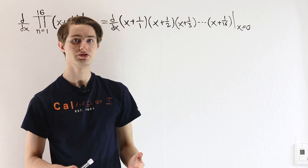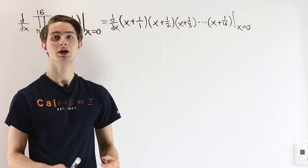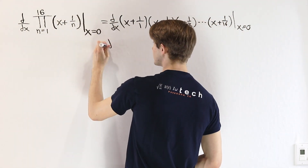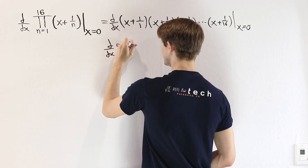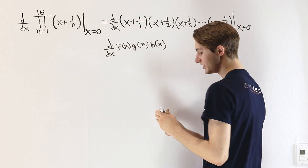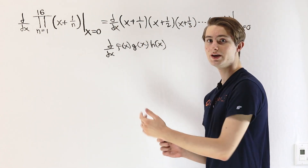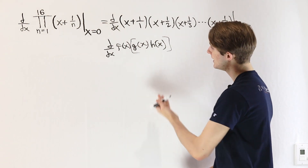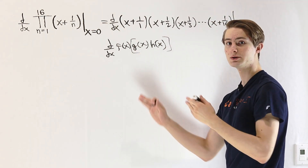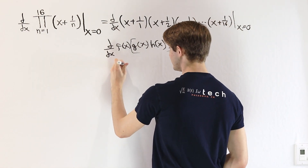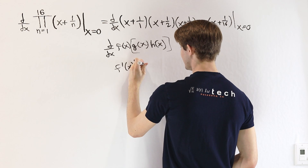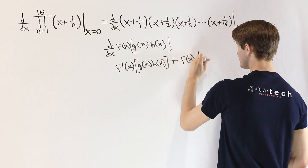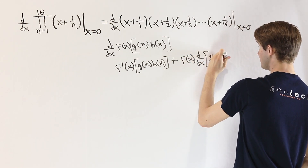This is a pretty big product. The first thing we have to understand is how the product rule works when we're multiplying more than two functions. So let's quickly go over that. If we take the derivative of a product of three functions — f of x times g of x times h of x — the first thing we can do is split it into two parts and apply the product rule. We say f of x is our first function, multiplied by g of x times h of x, and apply the normal product rule: f prime of x times g of x times h of x, plus f of x times the derivative of g of x times h of x.